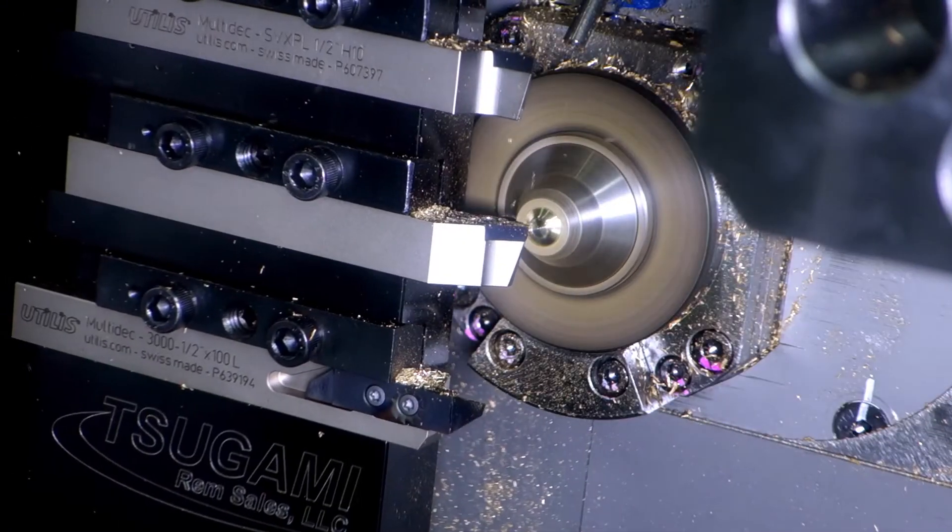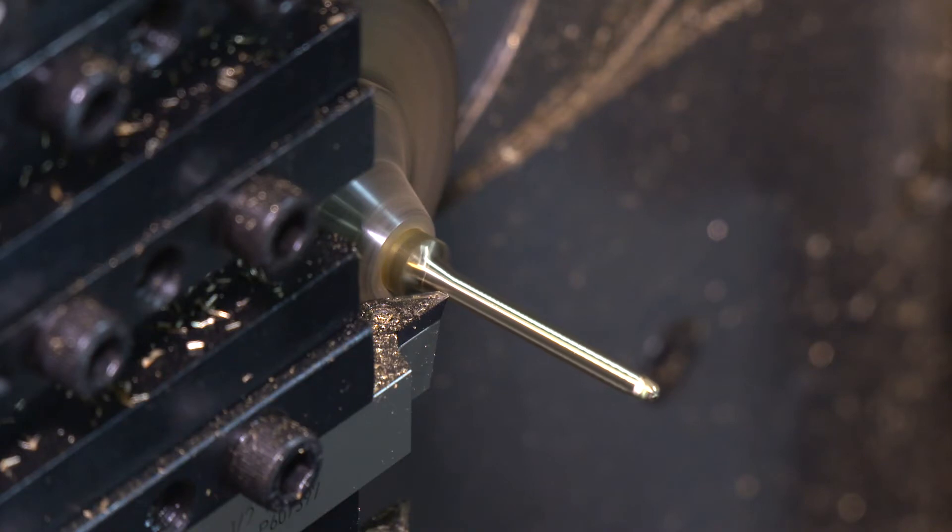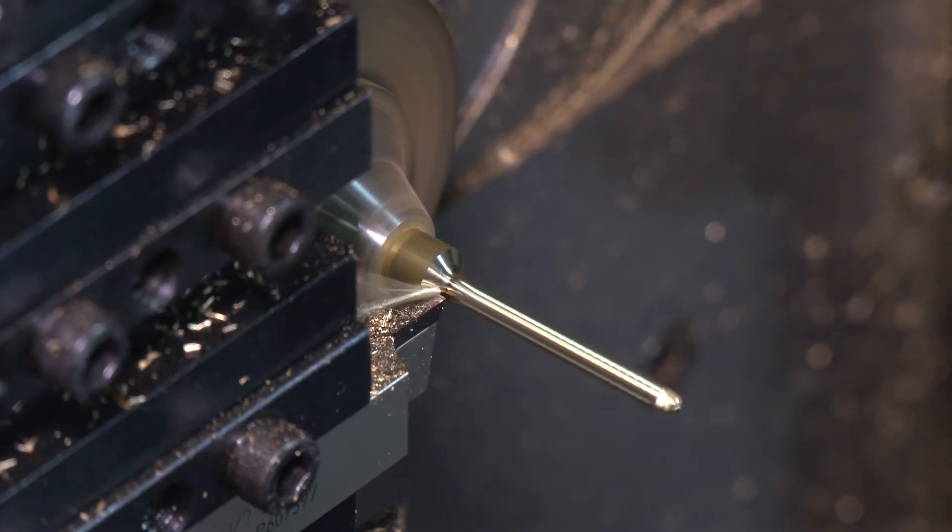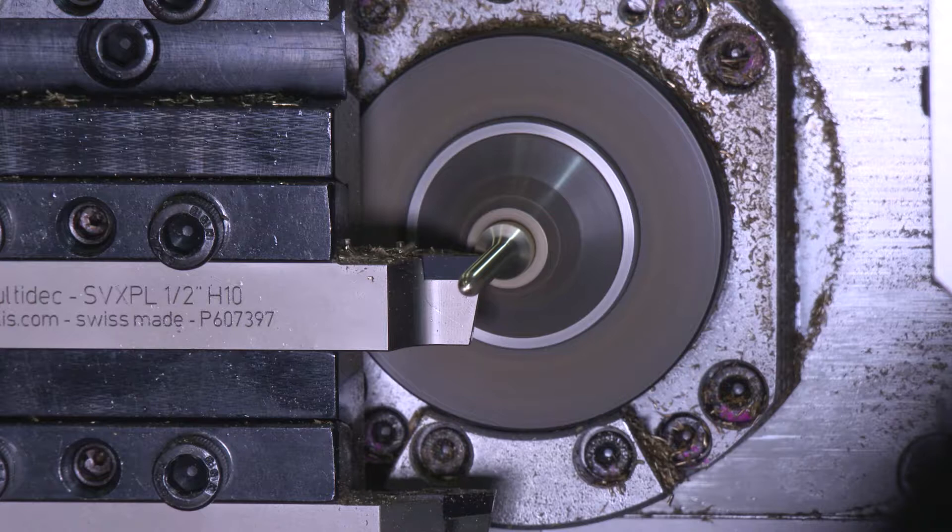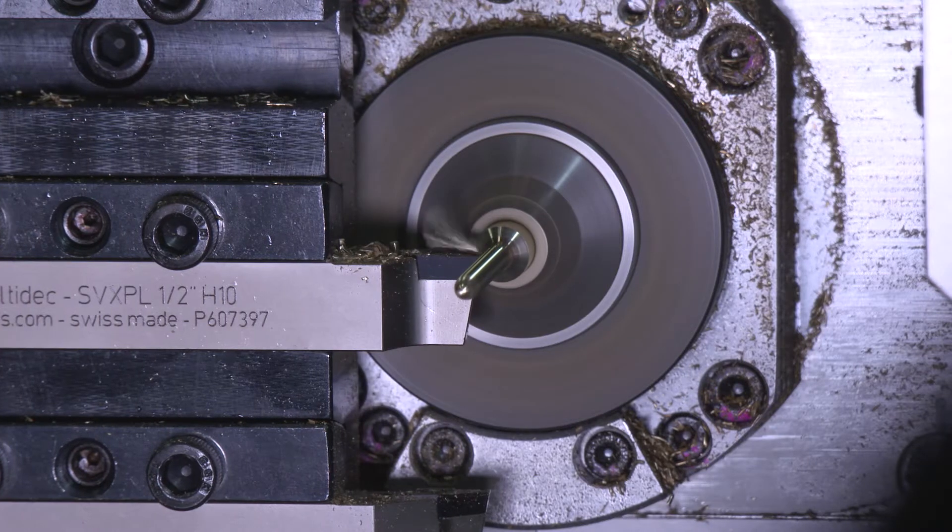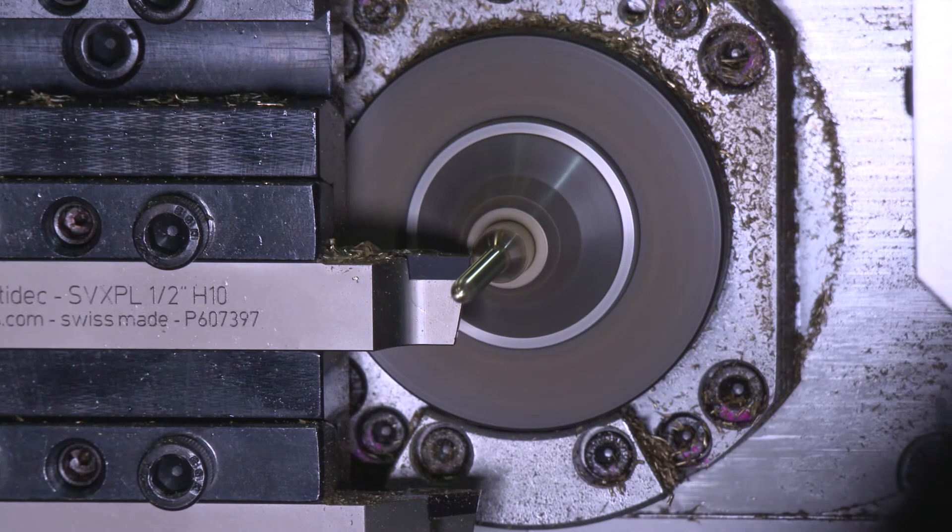So the front side of the tool cuts, and the back side wiper angle actually rubs or burnishes the part to improve the finish. Correct. So no need for secondary operations for finishing with the kind of finish that you'll get off of here.